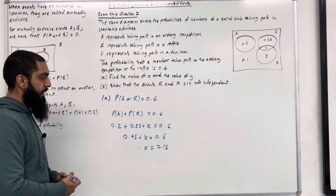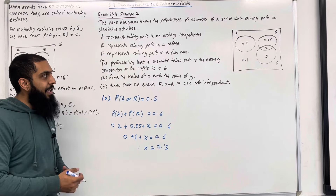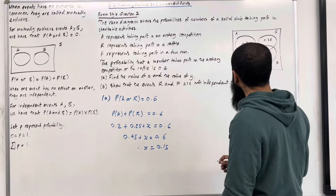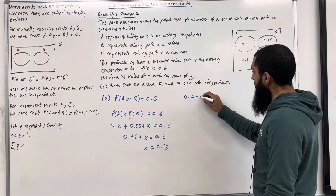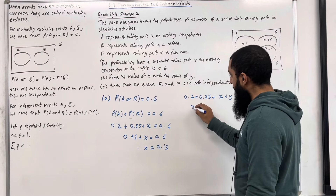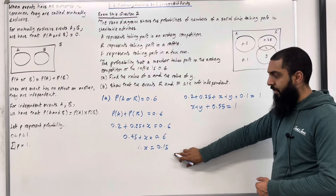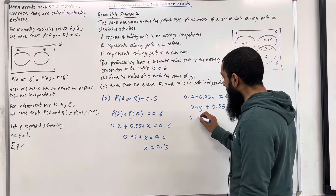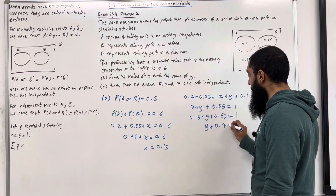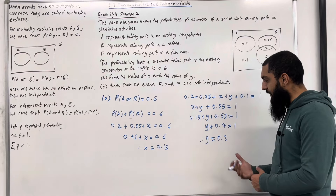That gives us the value of X. Now to work out the value of Y, we know that the total of all probabilities is equal to 1, so I can generate a second equation by adding all the probabilities and setting it equal to 1. So I have 0.2 plus 0.25 plus X plus Y plus 0.1 equals 1. This gives X plus Y plus 0.55 equals 1. Substituting X equals 0.15, I get 0.15 plus Y plus 0.55 equals 1, which reduces to Y plus 0.7 equals 1. So Y equals 0.3.